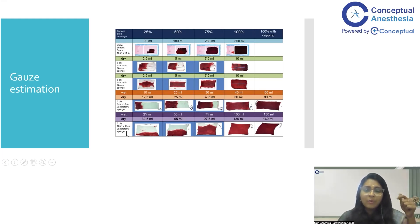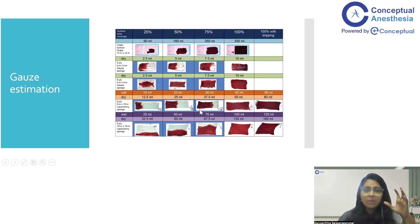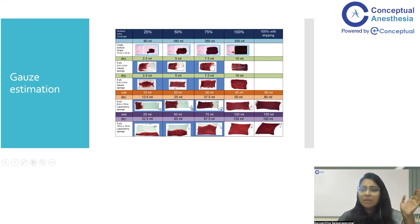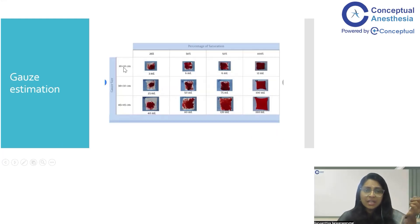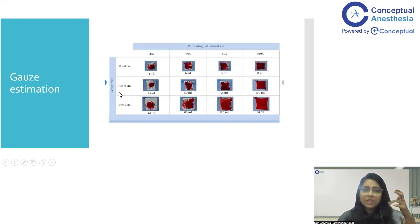If it is an 18×18 inch laparotomy mop pad, completely soaked will be 160 ml. In summary: a partially soaked gauze is about 5 ml, completely soaked is 10 ml; a partially soaked laparotomy sponge pad is 75 ml, completely soaked is 130 ml, and a fully packed abdominal pad completely soaked is 160 ml. In centimeter measurements, a 10×10 cm gauze completely soaked is 10–12 ml, a 30 cm mop pad is 100 ml, and a 45 cm pad is 160 ml. Each center may use different gauze sizes, so identify your setup's gauze dimensions to estimate blood loss effectively.